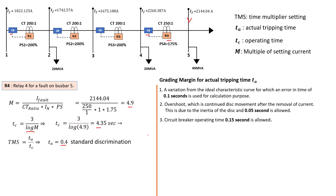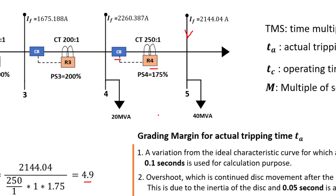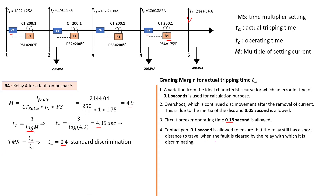The third factor is the circuit breaker operating time — you must remember that the relay sends a signal to the circuit breaker, and current is only interrupted when that circuit breaker trips — so you account for 0.15 seconds. The fourth factor is the contact gap: 0.1 seconds must be allowed for the relay contact gap. Adding all these factors together gives 0.4 seconds — that is where the standard discrimination value comes from. Continuing with our TMS calculation, we find a value of 0.092.